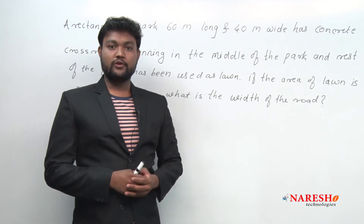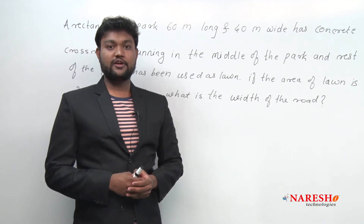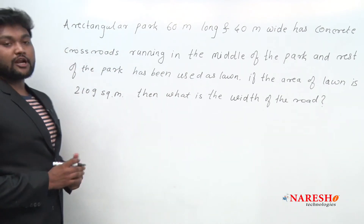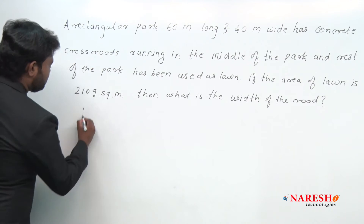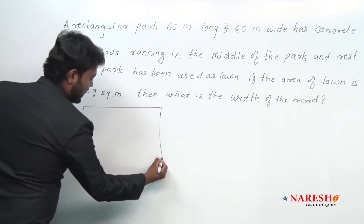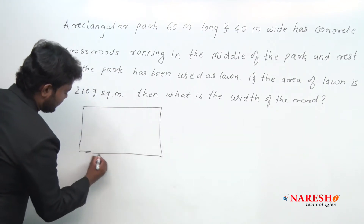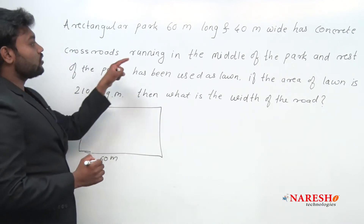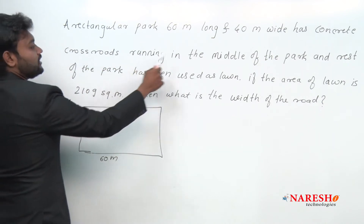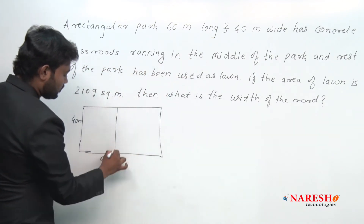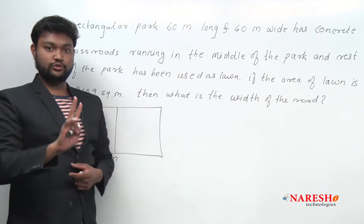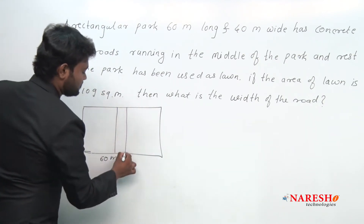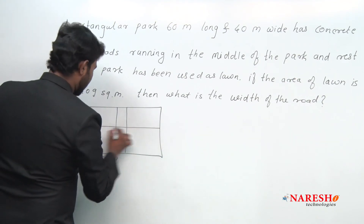For solving this kind of question, first of all we have to draw a diagram according to the question. The rectangular park is 60 meter long and 40 meter wide. It has concrete crossroads running in the middle of the park — crossroads means two roads exactly running in the middle, so this is one road and this is another road.